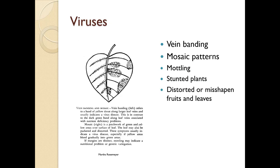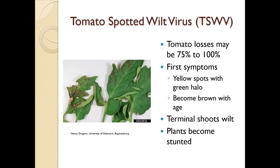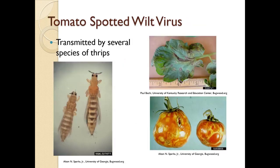Viruses: you're going to have vein banding, mosaic patterns, mottling, stunted plants, and distorted or misshapen leaves or fruits. Here we have tomato spotted wilt virus — you may lose up to 100% of your plants. The first symptoms are yellow spots with a green halo that become brown with age; terminal shoots will wilt and plants will become stunted. These are spread by several species of thrips, which are very tiny insects often living in weeds around your garden, so it's really important to keep your weeds away.